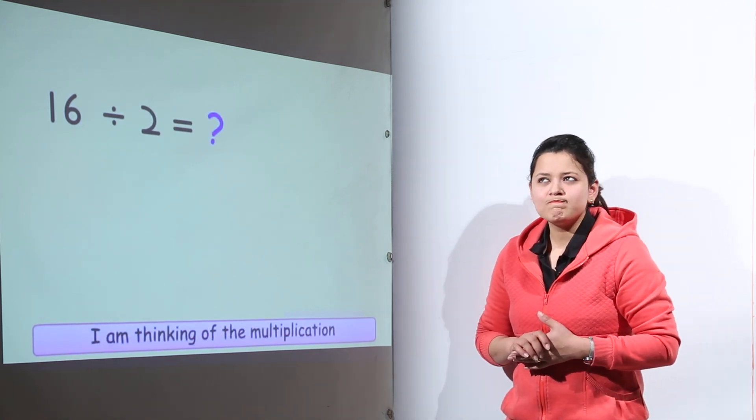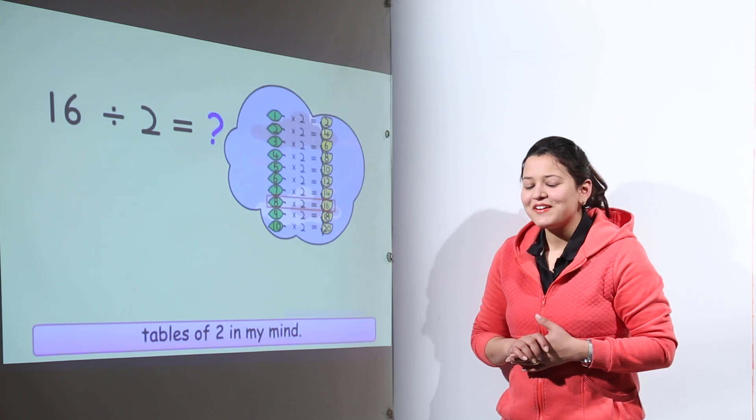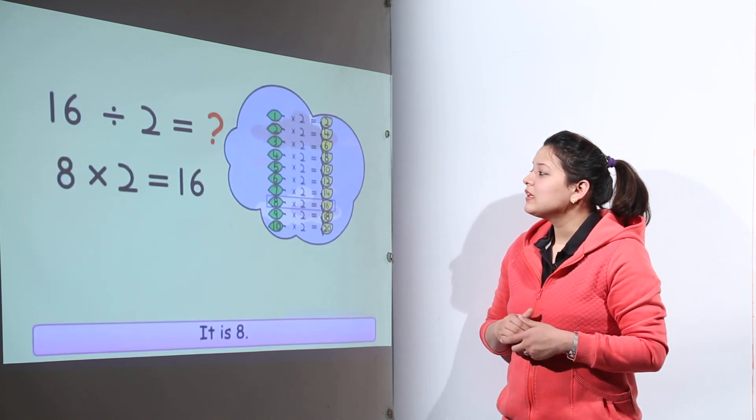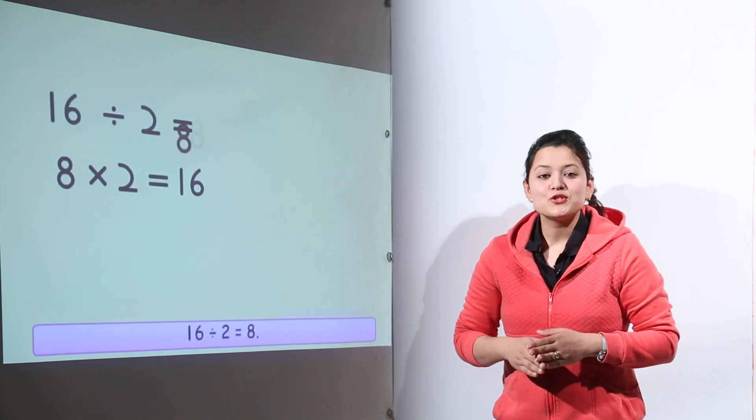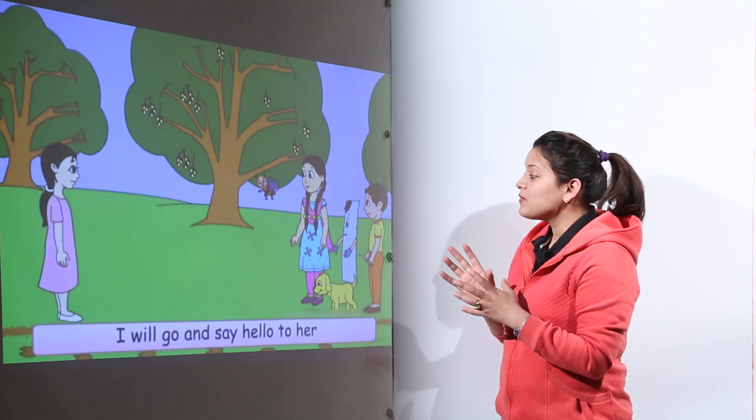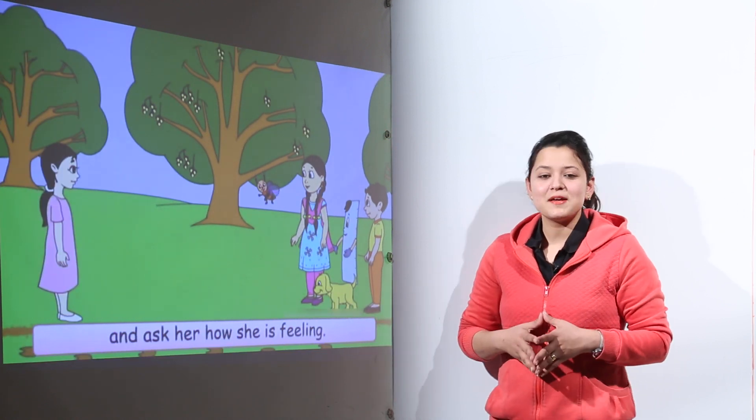So if we divide this 16 with 2, what do we get? It's a bit difficult for you, right? So what you can do? You can check the table of 2. Now table of 2 says that 2 eights are 16. So when you divide 16 with 2, you are going to get 8. So that means there would have been 8 people in the temple at that time.